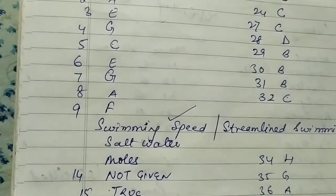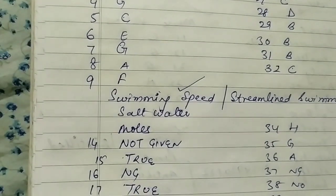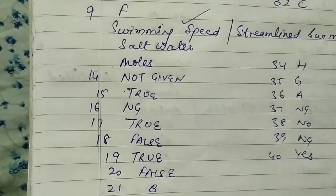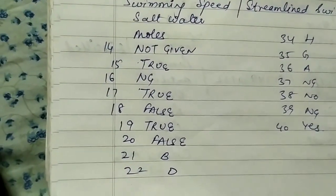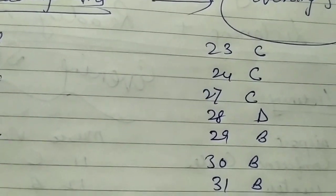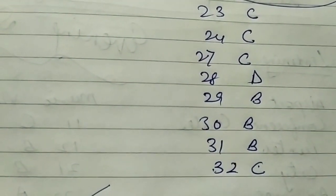Salt water, moles. Then 14 is not given, 15 true, 16 not given, 17 true, 18 false, 19 true, 20th false, 21st B, 22nd D. Next is 23rd C, 24 C, 27 C, 28 D, 29 B, 30th B, 31st B.